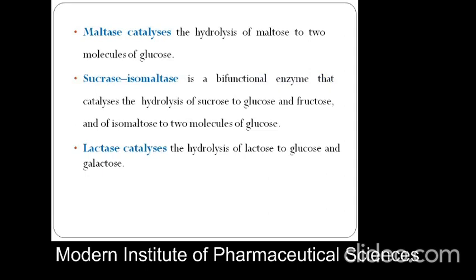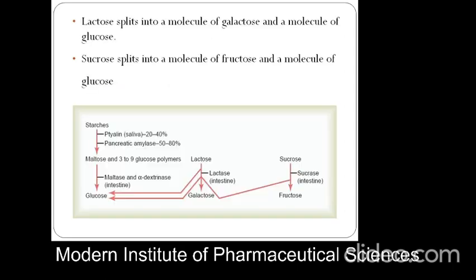Maltase catalyses the hydrolysis of maltose to two molecules of glucose. Sucrase-isomaltase is a bifunctional enzyme that catalyses the hydrolysis of sucrose to glucose and fructose, and isomaltase yields two molecules of glucose — glucose and fructose are isomers. Lactase catalyses the hydrolysis of lactose to glucose and galactose. So lactose is converted to galactose and glucose, and sucrose is converted to fructose and glucose.